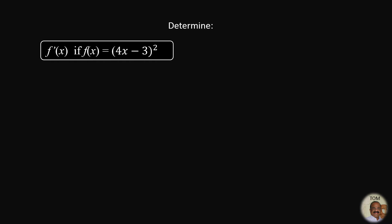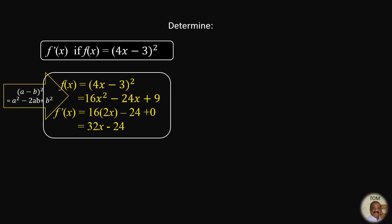Find f'(x) if f(x) = (4x − 3)². We have a binomial inside the bracket, so we must expand it first using the identity (a − b)² = a² − 2ab + b². Squaring carefully: 16x² − 24x + 9. How do we get 24x? 4x times 3 is 12x, times 2 gives 24x. Now differentiating all three terms: derivative of 16x² is 32x, derivative of −24x is −24, and derivative of 9 is 0. Final answer: 32x − 24.